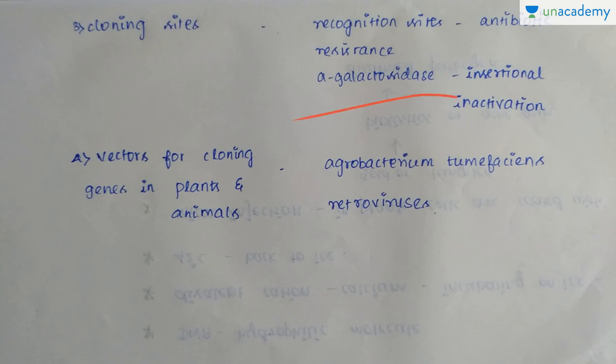As a result of insertional inactivation, if it gives blue-colored colonies, there is no rDNA insert present. If the colony does not show any color, then rDNA-containing cells are present in those colonies. Now, the vectors for cloning genes in plants and animals.